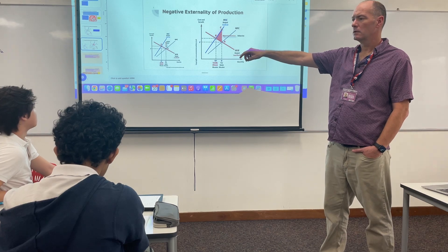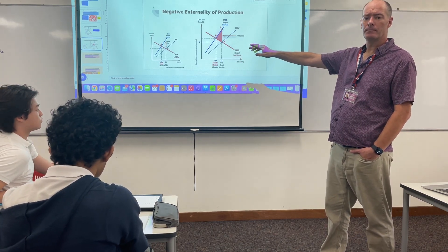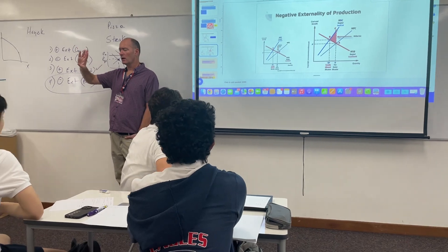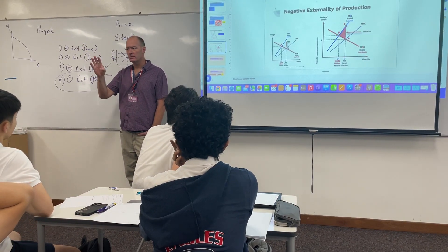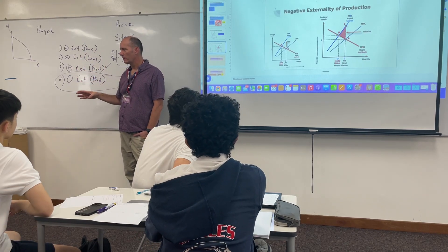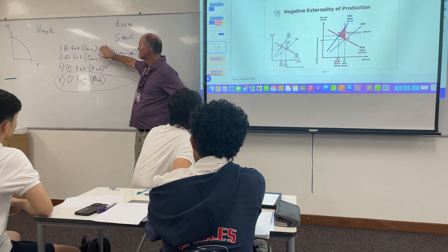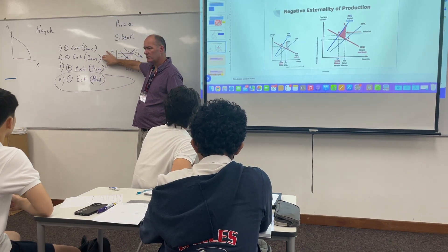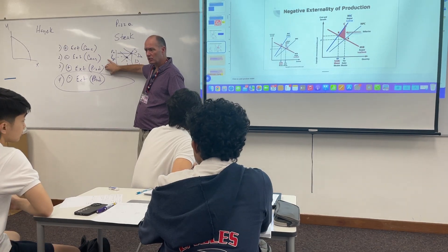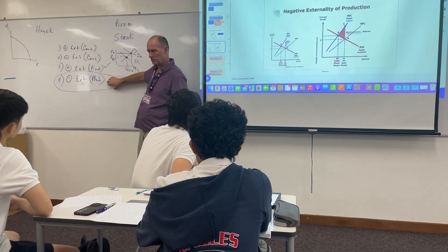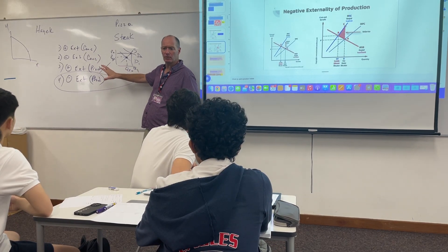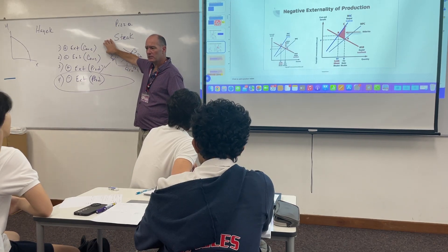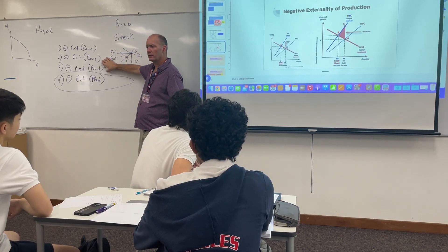There are four kinds of externalities — I'm not going to explain what an externality is here; self-paced students can watch my other video for that. I want to make sure you know all four: positive externality in consumption, negative externality in consumption, positive externality in production, and negative externality in production. The two I've already covered in my videos are negative for production and positive for consumption, so here I'm going to focus on the other two.